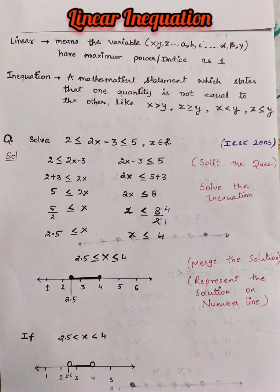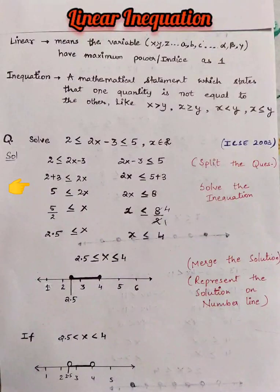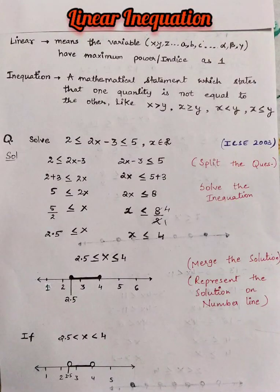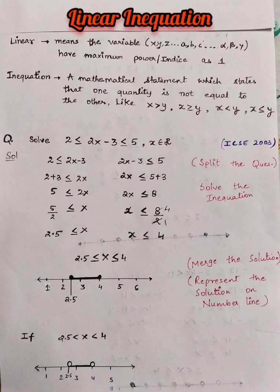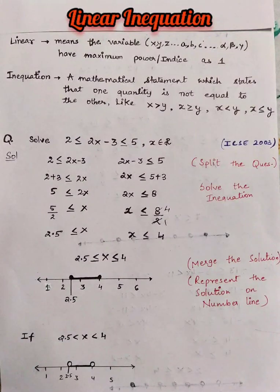Let us solve the first inequation. We will transfer −3 to the other side of the symbol, which becomes +3. Then 2x ≥ 5, so x ≥ 5/2, therefore x ≥ 2.5.